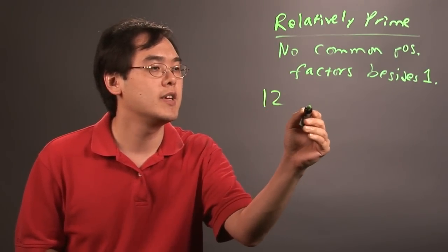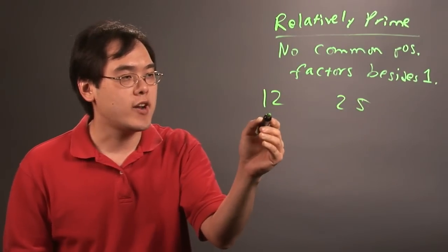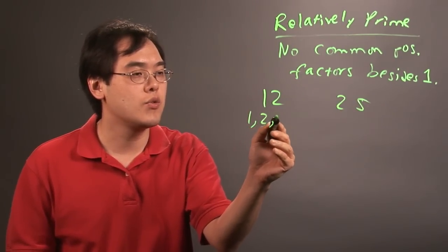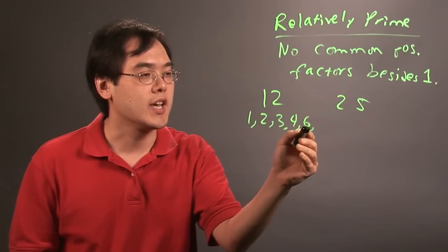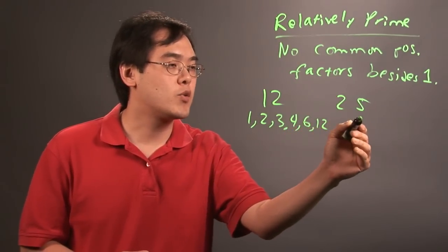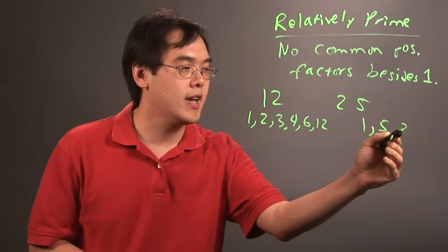So for example, if you have the numbers 12 and 25, the factors of 12 are 1, 2, 3, 4, 6, and 12, but the factors of 25 are 1, 5, and 25.